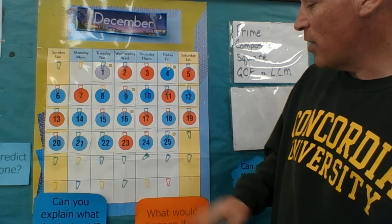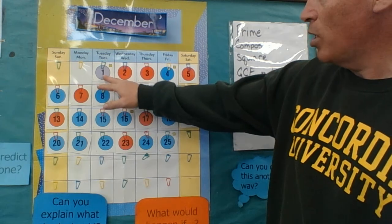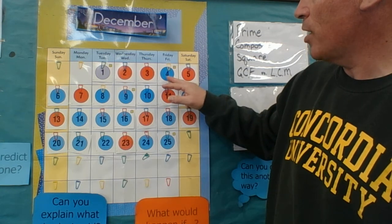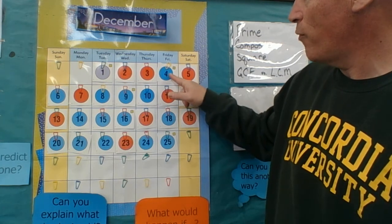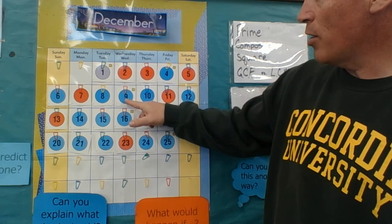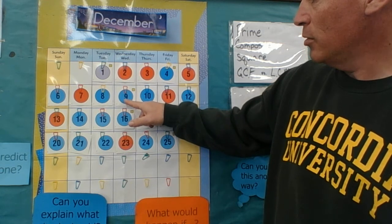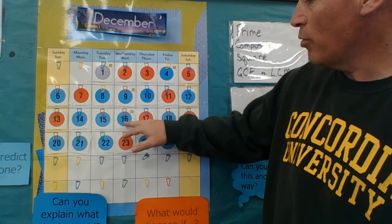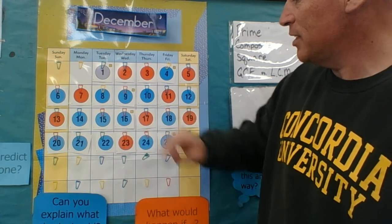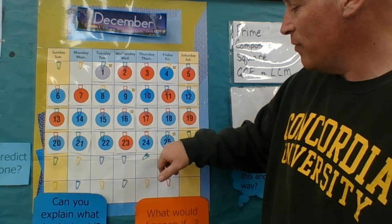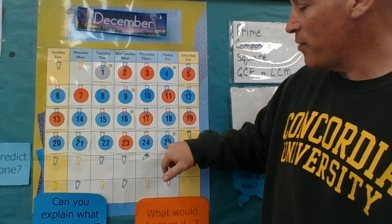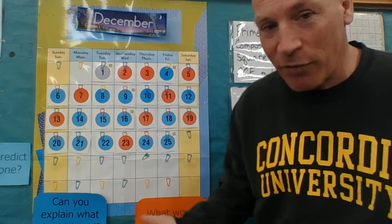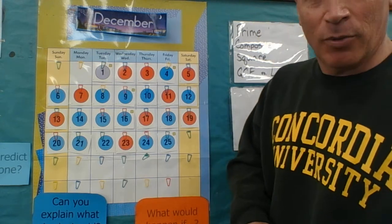Just to refresh, one times one or one squared is one. Two times two or two squared is four, so four is a square number. Three squared or three to the power of two is nine. Four squared or four to the power of two is four times four, which is 16. And five squared or five times five is 25. Then the next one would be six times six, which would be 36, but we don't have 36 days in a month. That'd be a long month, wouldn't it?